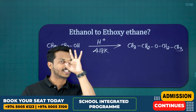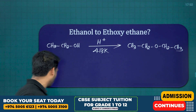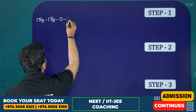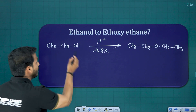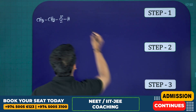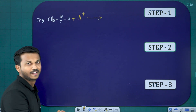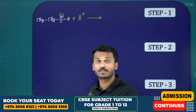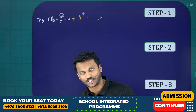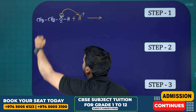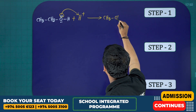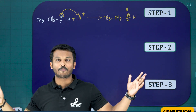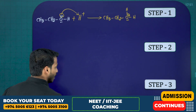Let's study the mechanism in three steps. We are converting ethanol into ethoxyethane. Step number one: ethanol is CH3CH2OH, where oxygen contains a lone pair. We are heating ethanol with an acid, so let's bring in the H+ ion. The lone pair on oxygen is electron-rich and H+ is electron-deficient, so oxygen donates its lone pair and takes the H+. We get CH3CH2-OH2+ — oxygen gets a positive charge because it lost electrons to take the H+.